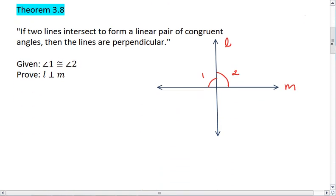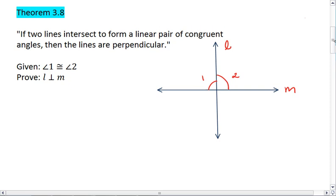Let's look at the first theorem. Theorem 3.8 tells us that if two lines intersect to form a linear pair of congruent angles, so we have lines L and M which intersect. Angles 1 and 2 are a linear pair of angles here, and the proof is saying that they are congruent. We then need to show that L and M have to be perpendicular.